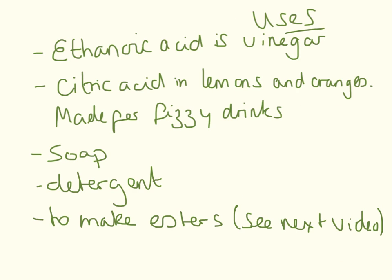The uses for carboxylic acids: ethanoic acid is vinegar. Citric acid is found in lemons and oranges and is made in high quantities for use in fizzy drinks. We can also use carboxylic acids in soap, in detergents, or to make esters — which is what my next video will be on.